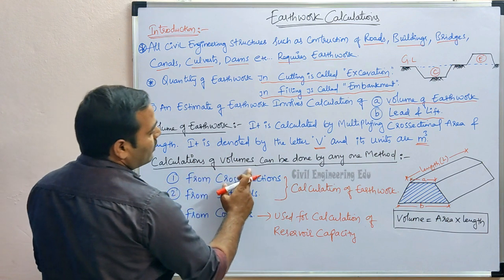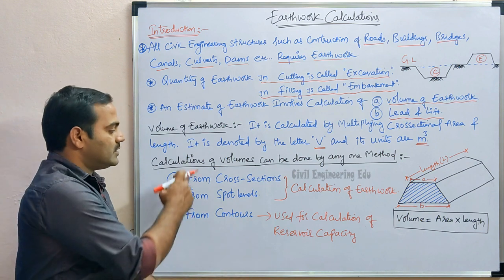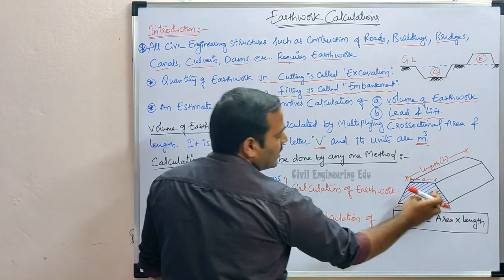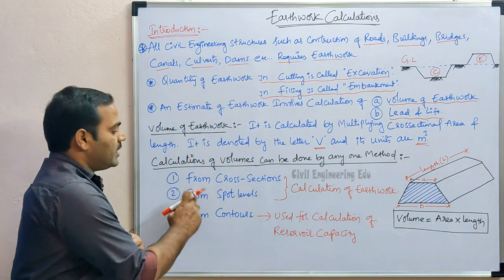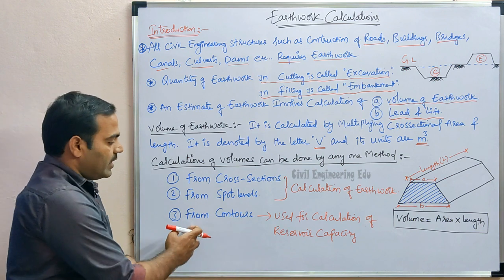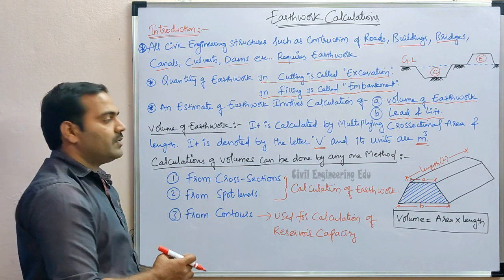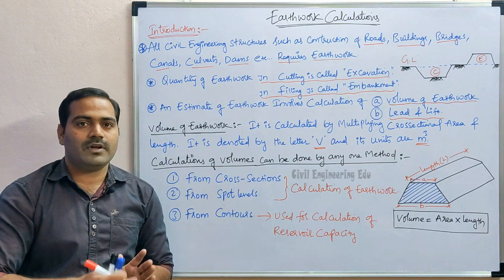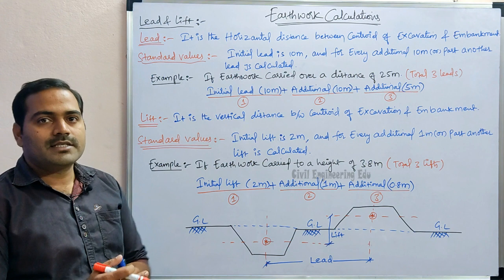Calculation of volumes can be done by any one of three methods. First is from cross sections — if we multiply the cross-sectional area with length we get the volume. Second is from spot levels. Third is from contour levels. We will understand all three in detail in the further coming videos while doing problems.